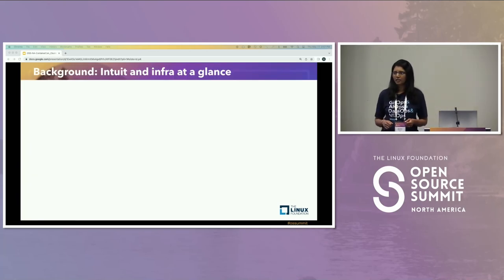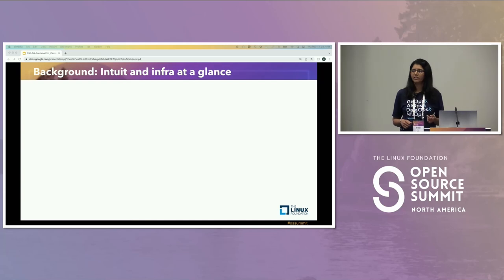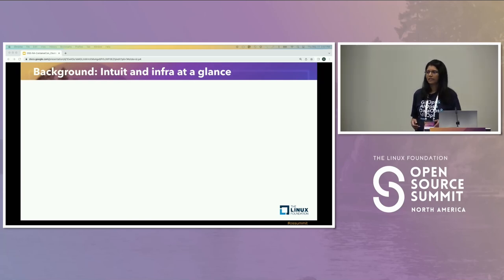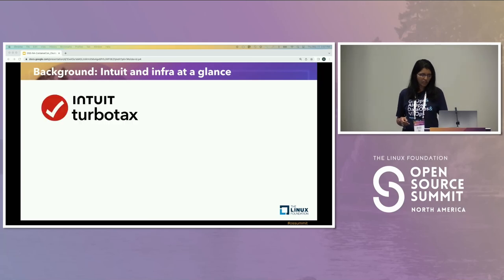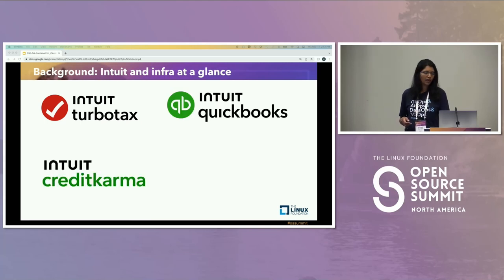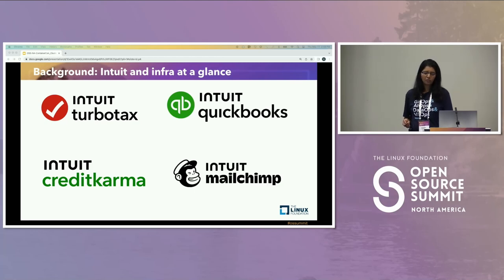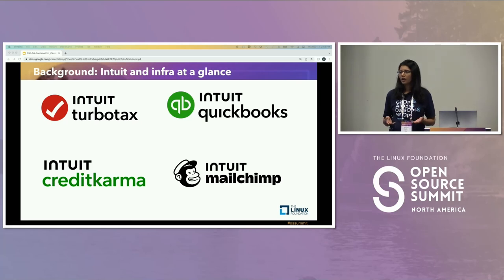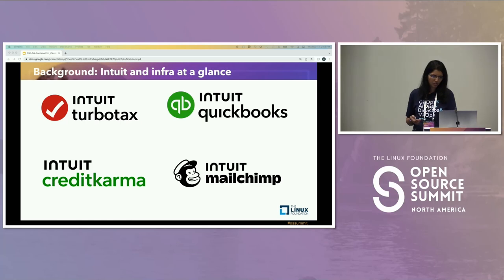For those who don't know what Intuit does, Intuit is a fintech platform company that is popularly known for building financial products and services such as TurboTax, which is used for tax prep and tax filing, QuickBooks for accounting and payroll, Credit Karma for credit score analysis, and MailChimp for small-medium business marketing needs. All of these products and services run on our Kubernetes-based platform infrastructure.